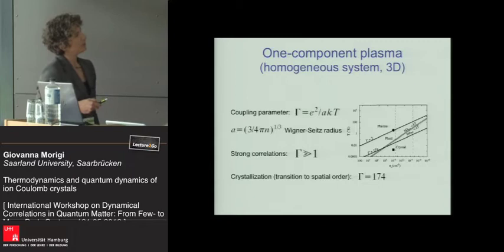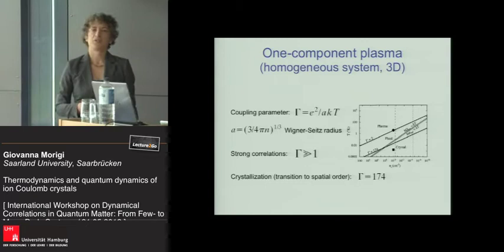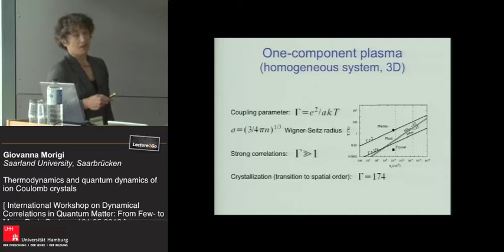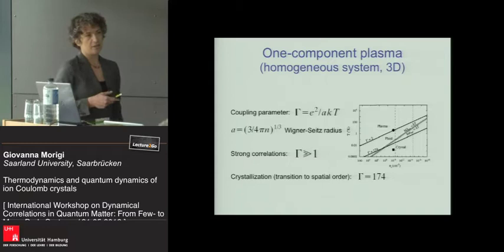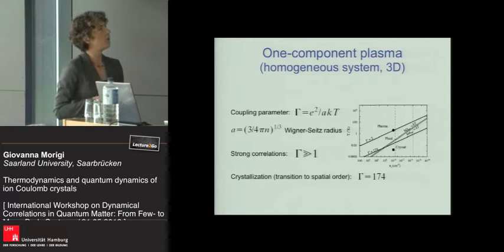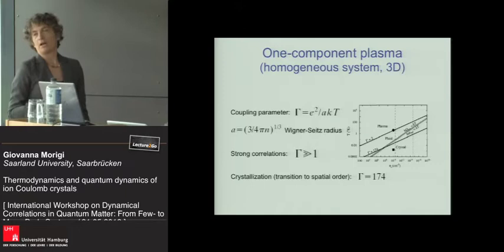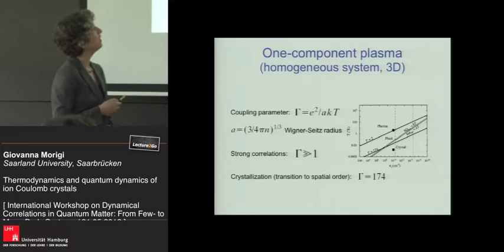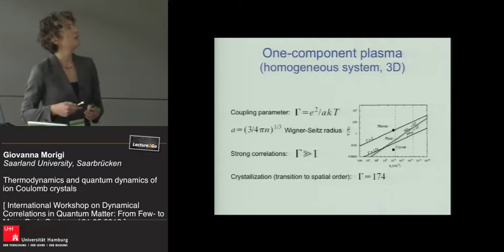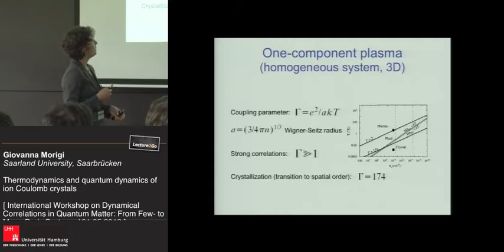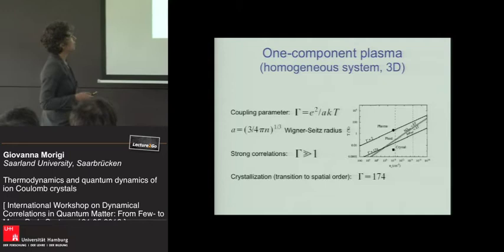This parameter gamma is actually determining the thermodynamic properties. In the classical regime, it is practically the parameter that contains the physical quantities and determines the thermodynamic property of the system. This parameter is the ratio between the interaction strength between two particles: E squared is the charge squared, A is the interparticle distance—one over the density to the one third, the so-called Wigner-Seitz radius—and KT is the thermal energy. When the thermal energy exceeds the interaction potential, you have very low correlations and the system behaves like a liquid. On the other hand, if you decrease the temperature or increase the density or the charge, you can achieve a very large coupling parameter and reach the strongly correlated regime.